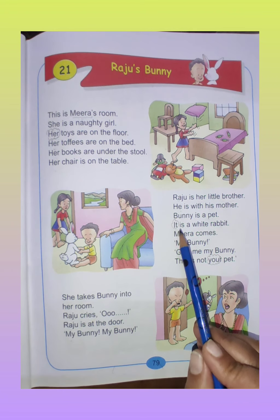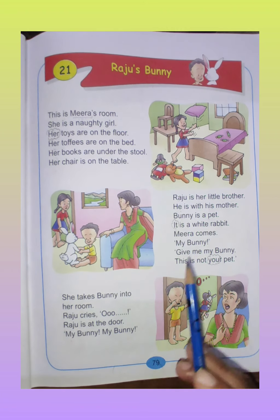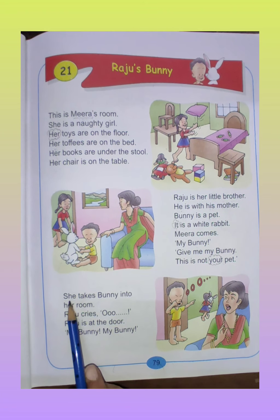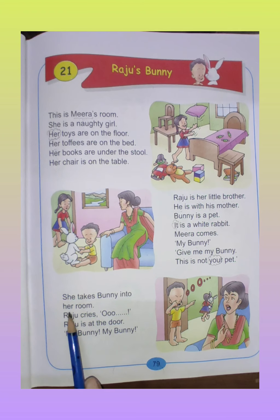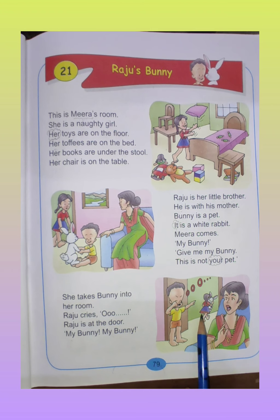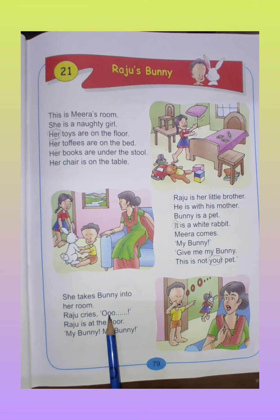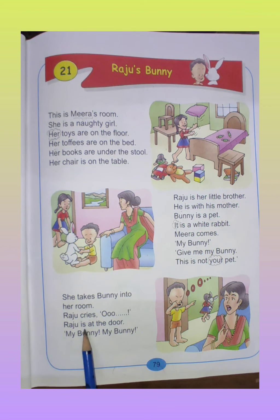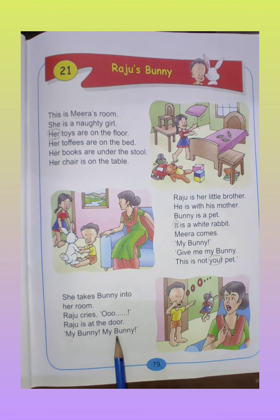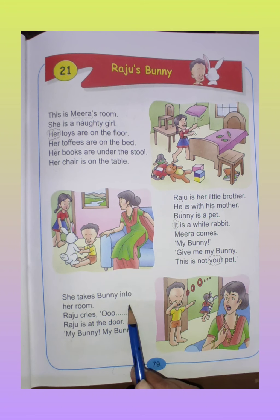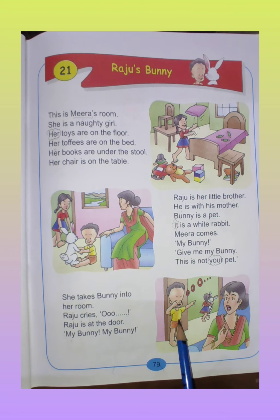She takes Bunny into her room — Meera Bunny ko apne room mein le jaati hai. Raju cries — Raju rone lagta hai. Raju is at the door. He cries: 'My bunny! My bunny!' You can see there is an exclamation mark here — these expressions are Raju's.